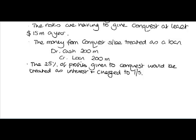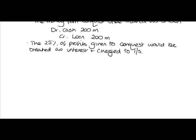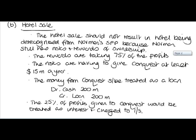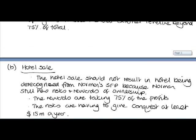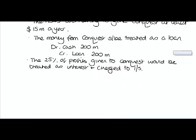We've got our debits and credits in and we've explained how we would deal with the items. We'll keep the asset in our accounts and depreciate it over its useful life. It's not a sale and leaseback because we're not paying rentals - we're just giving them 25% of the profits. So that's the hotel sale covered.